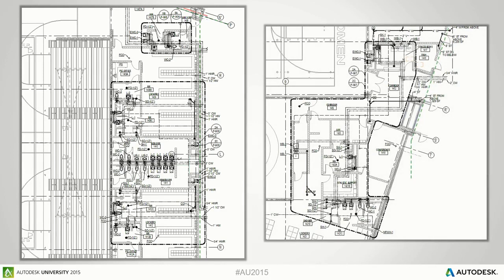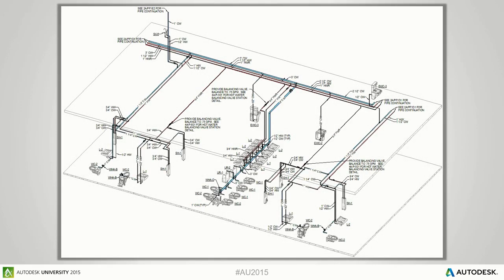In these cases, instead of trying to tag all the routing inside a tight area, we'll tag just the fixtures on the plan but not tag any of the pipe routing inside. Instead, we create an isometric view that has all that information displayed. It's a lot clearer, usually cleaner, and easier to produce than trying to get all the information tagged in such a tight space.